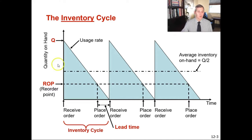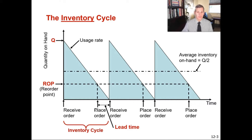That is your inventory cycle. In this perfect-case scenario, if the time period were one year, your inventory turnover for this item would be three — you receive 100 pieces, use them up, receive another 100, use them all up, receive another 100 and use them all up. So you turn over your inventory three times per year, giving you an inventory turns of three in this example.